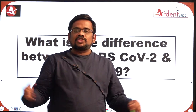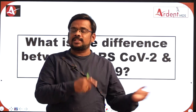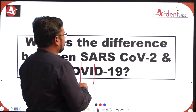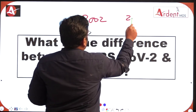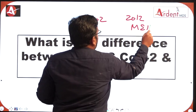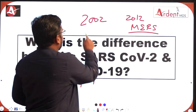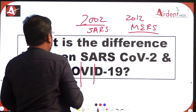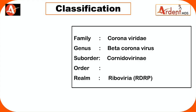For example, Varicella Zoster and chickenpox — chickenpox is the disease, the microorganism which causes it is Varicella Zoster. There were similar types of coronavirus seen in 2002 and 2012. In 2012 it is called MERS — Middle East Respiratory Syndrome — and in 2002 it is called SARS, both presenting as epidemics.